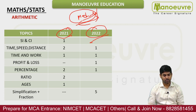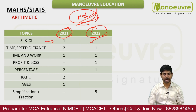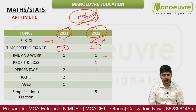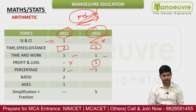In 2021, one question came from Simple and Compound Interest; in 2022 there was none. Time Speed Distance: two questions in one year, one in the other. Time and Work: one question each year. Profit and Loss: not in 2021 but present in 2022. Percentage: two questions in 2021, one in 2022. Ratio and Ages: present in 2021, not in 2022.